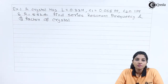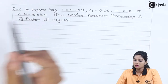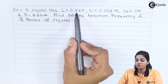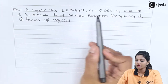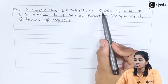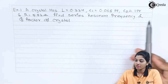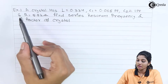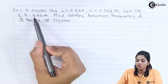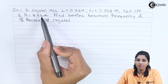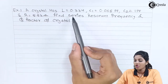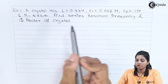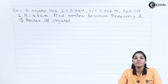The statement of the first problem is: a crystal has L equals 0.33 Henry, C1 equals 0.065 pF, C2 equals 1 pF, and R equals 5.5 kΩ. Find the series resonant frequency and Q factor of the crystal.